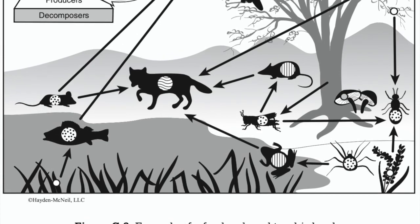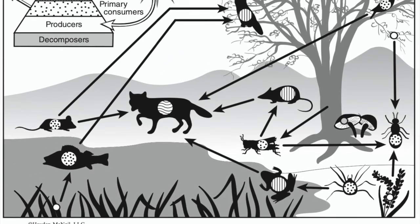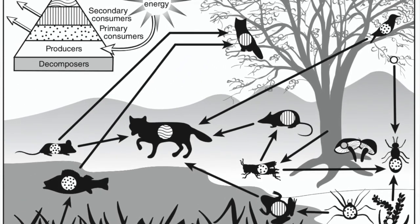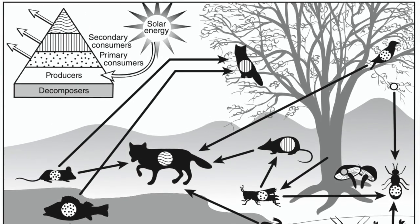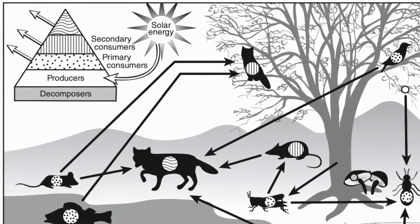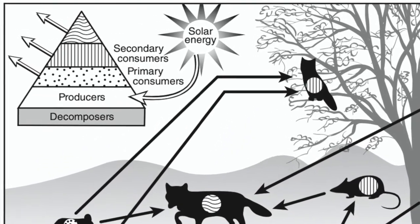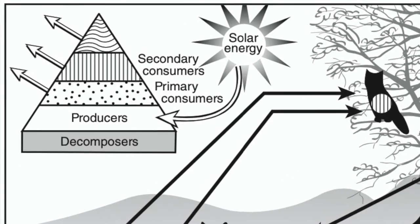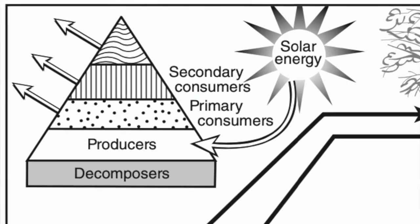Now we'd like to introduce you to the animals that we find in this habitat that make up the food web. Remember, all animals are heterotrophic, which means they get their energy and nutrients by eating other things. Generally we categorize different animals in food webs based on what they eat. Some of the broad categories are primary consumers and secondary consumers — primary consumers are animals that mostly eat plants, and secondary consumers are animals that eat other animals.